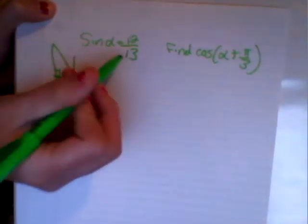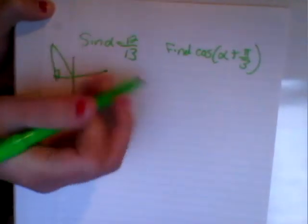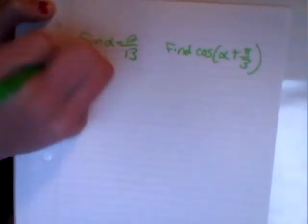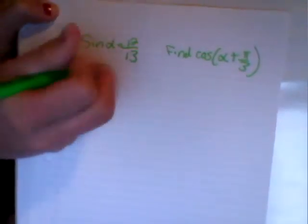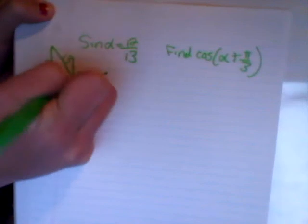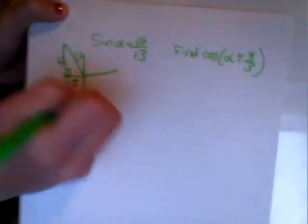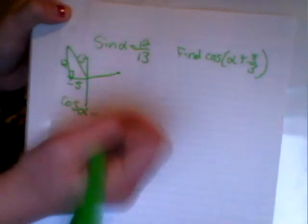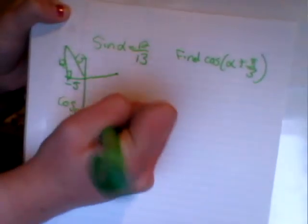We already have the sine of alpha equals 12 over 13, so 12 is the opposite side and 13 is the hypotenuse side. And the adjacent side is going to be negative 5. So then the cosine of alpha equals negative 5 over 13.